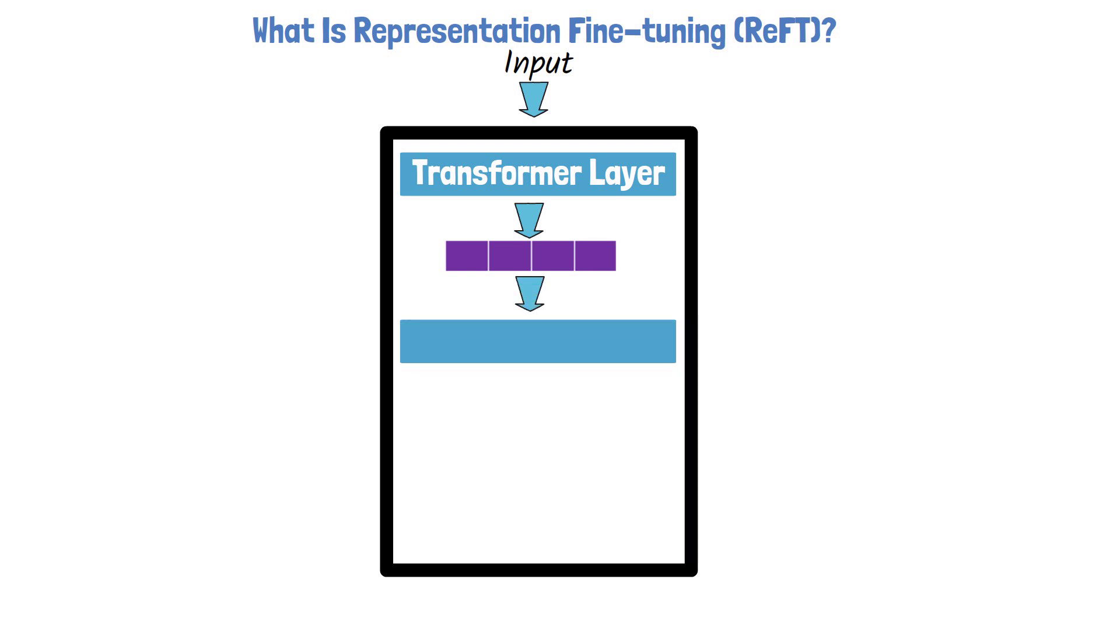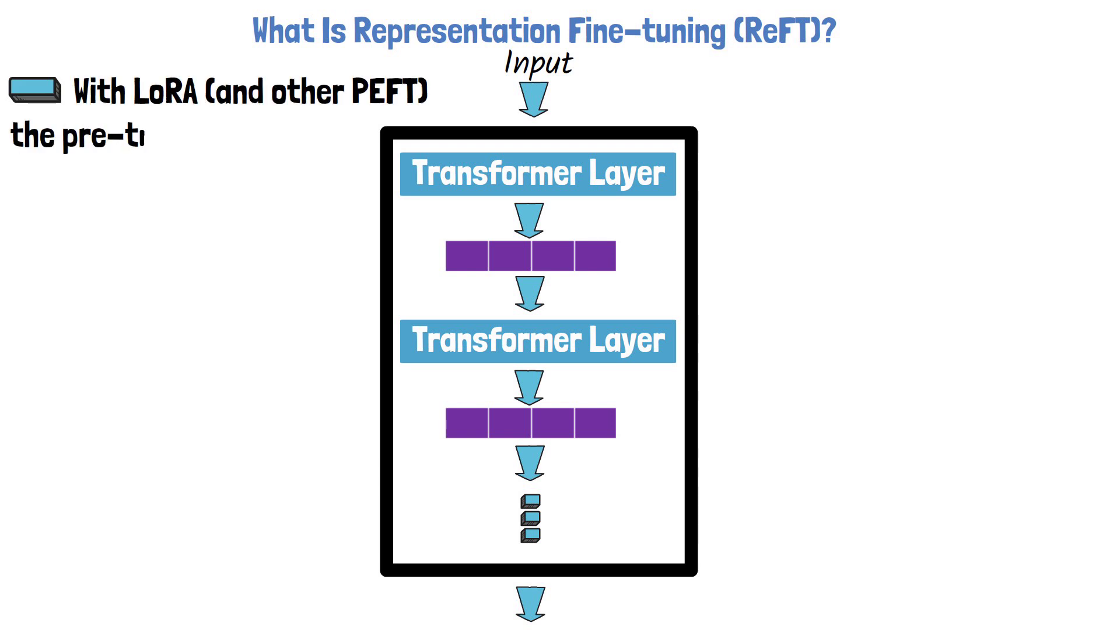After each layer we have a vector of hidden states, which we call representations. Each representation vector is then forwarded to the following transformer layer. With LoRA we mentioned that we train a small number of adapter weights. This is not a video about LoRA, but it is important to mention that once trained the weights are baked into the model. So the representations we get in each step of the transformer are impacted by the added LoRA weights, and they are not the original representations we would get from the pre-trained transformer.